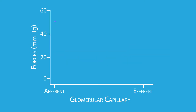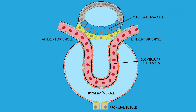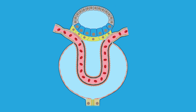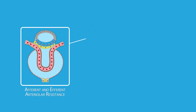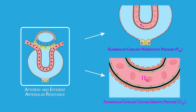We now know that glomerular capillary hydrostatic pressure and glomerular capillary colloid osmotic pressure directly regulate the glomerular filtration rate. In this lesson, we'll focus on how afferent and efferent arteriolar resistance regulate glomerular capillary hydrostatic pressure and colloid osmotic pressure.